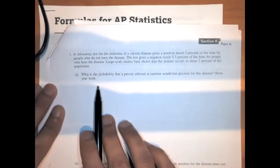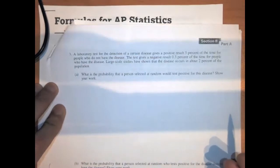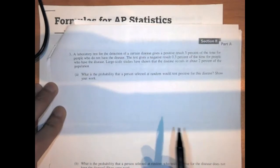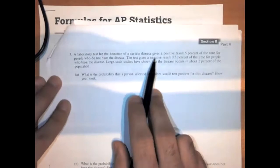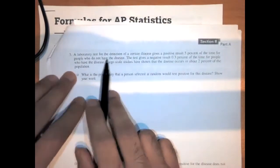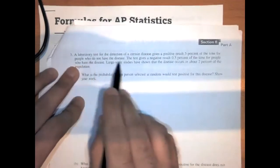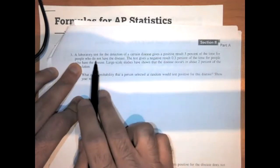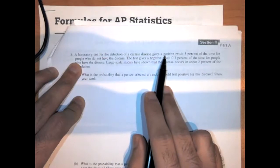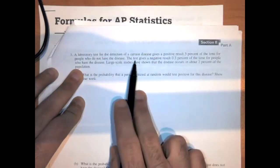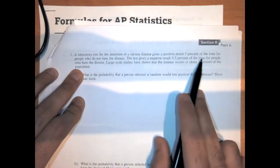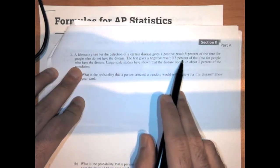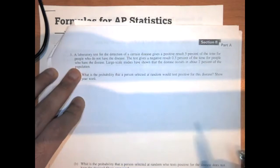There are a few different ways to do this problem, but the tree is the easiest. If you look at the problem and they give you conditional probabilities, that's the key hint to use a tree. I can tell these are conditional probabilities because it says for people who do not have the disease, the test gives a positive result 5% of the time. Given that someone has the disease, the probability they get a negative result is 0.3%. Those are conditional probabilities.